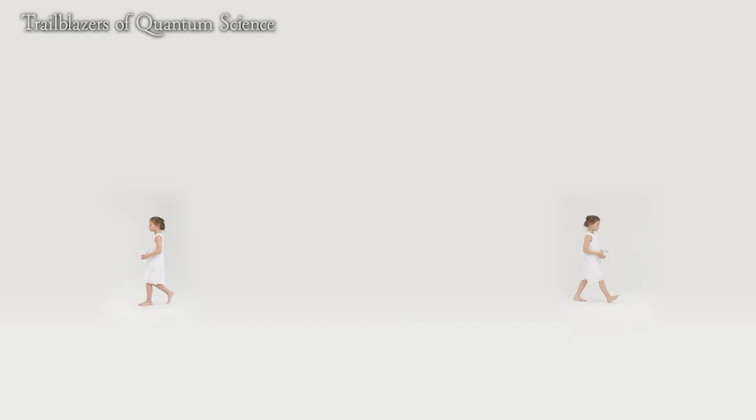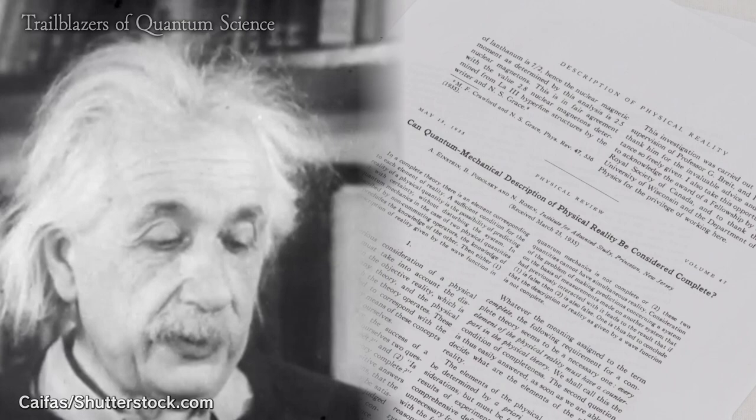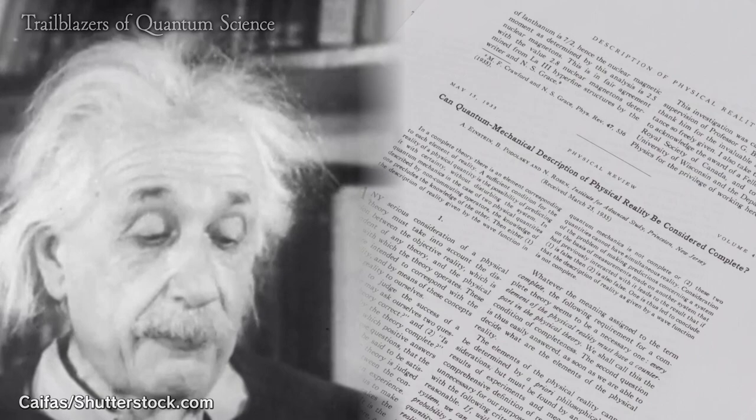Furthermore, because quantum entanglement can instantly change the state of a coin even if it is spatially distant, it is possible to consider that this phenomenon surpasses the speed of light. Therefore, Einstein, whose theory of relativity argues that nothing can exceed the speed of light, insisted in his study that quantum mechanics in which such a thing can occur is not complete.